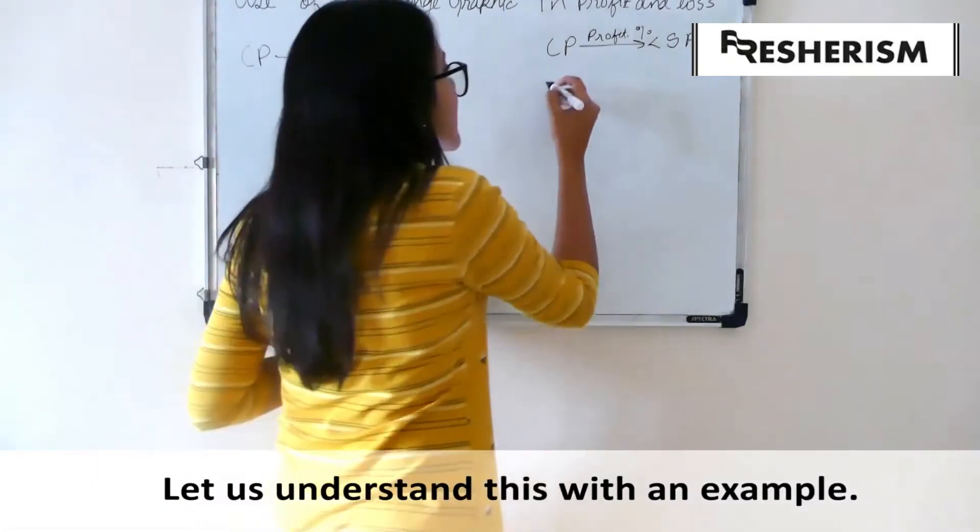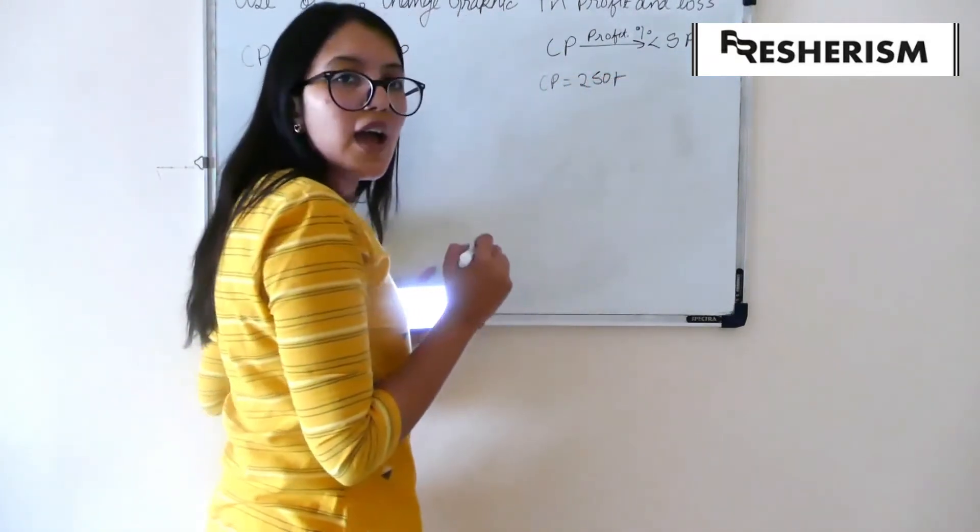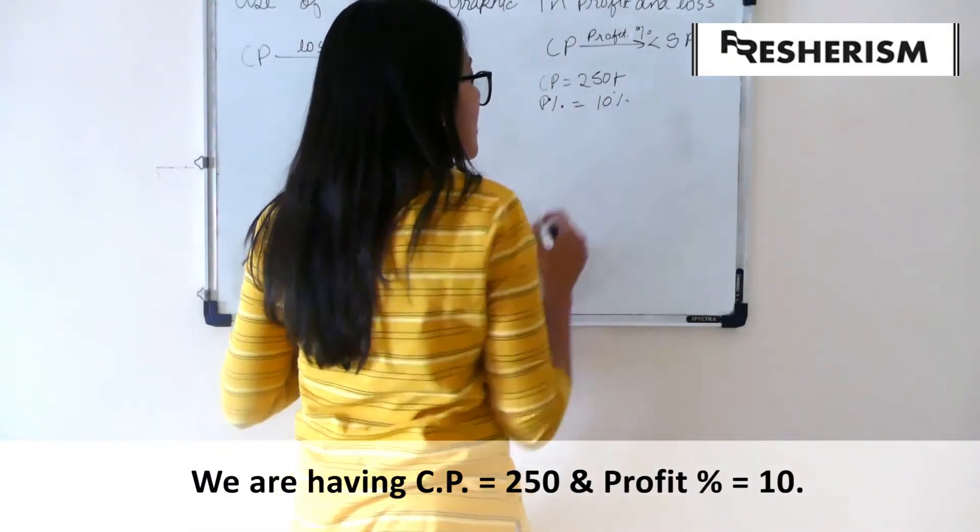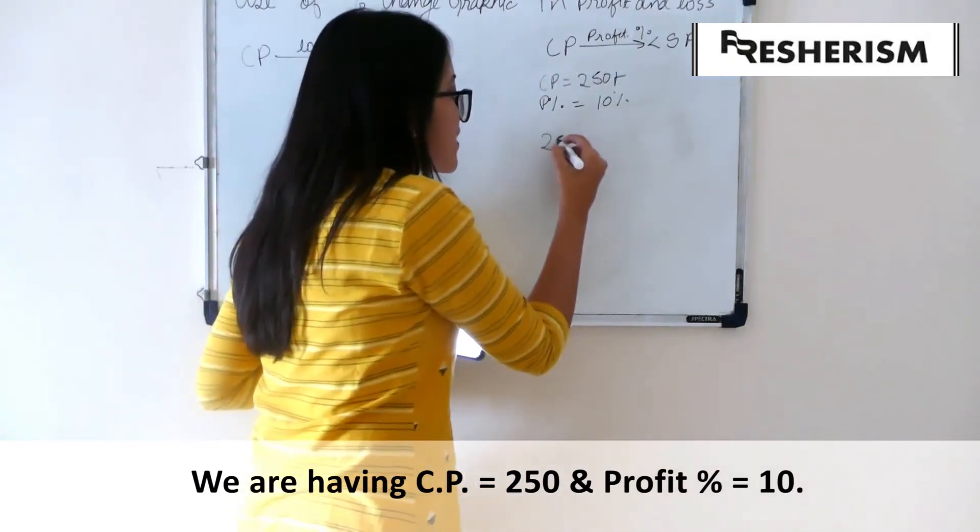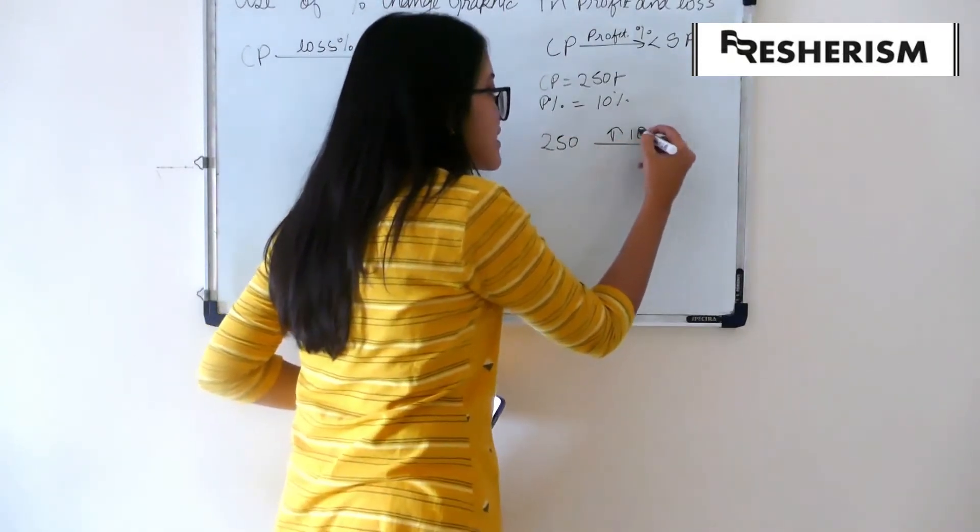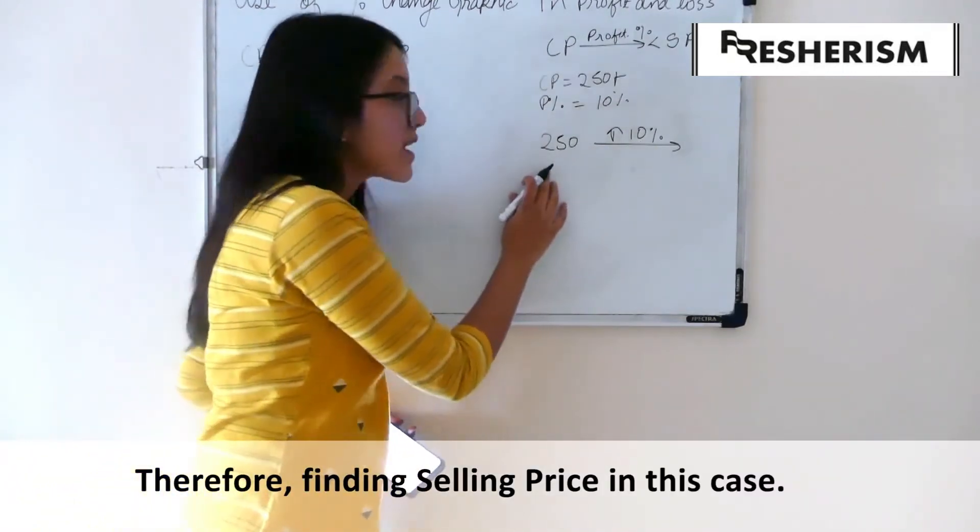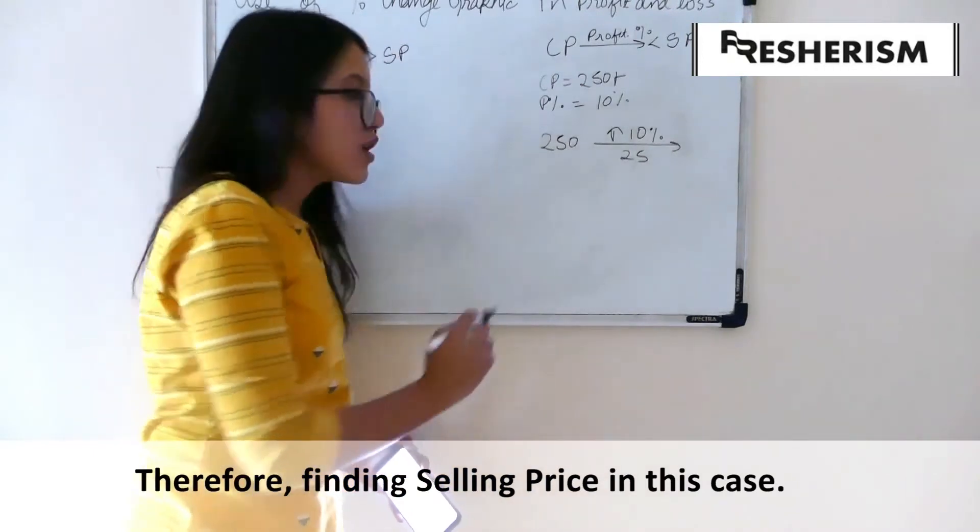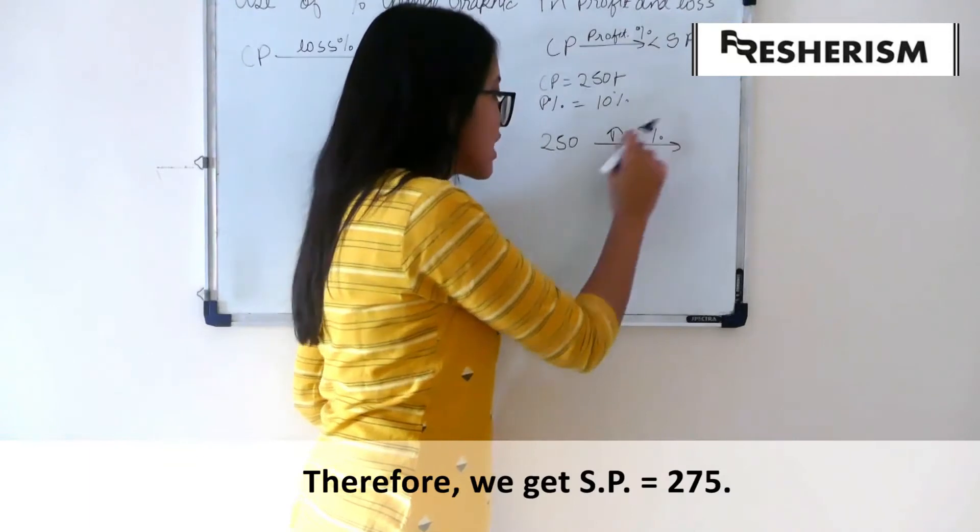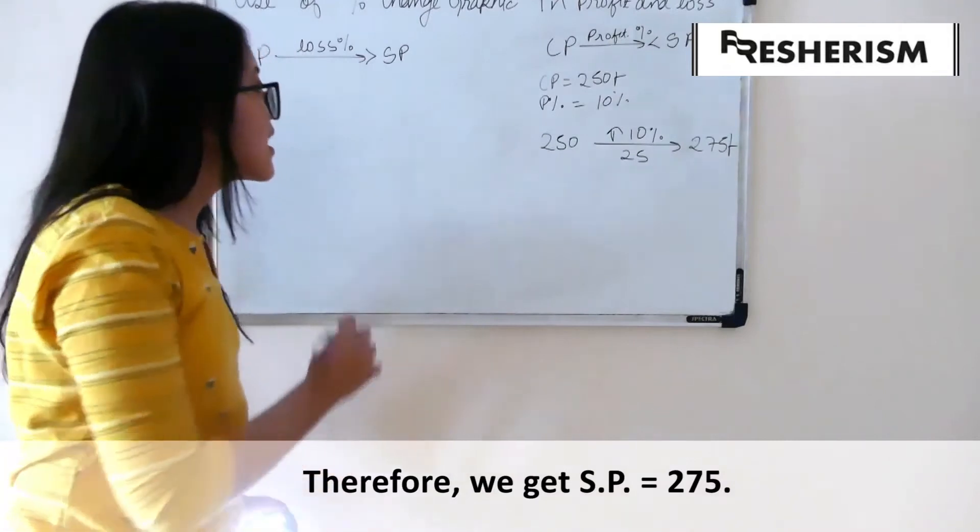Let us take an example. Let us say that my cost price is equal to 250 rupees and my profit percentage is equal to 10%. Therefore, when we go from 250 towards selling price I will make an increment of 10%. Now, 10% of 250 is 25. Therefore, this amount will increase by 25 and hence we will get our selling price which will be 275 rupees.